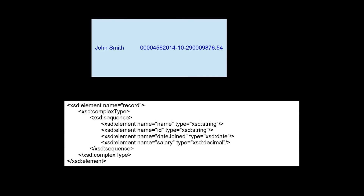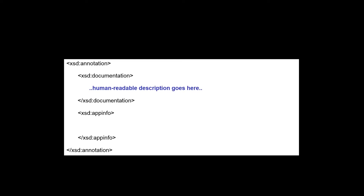The additional information is added in the form of XML schema annotations. An XML schema annotation provides additional information about an XML schema object such as an element, type or group. There are two kinds of annotation: documentation and app info. The documentation annotation is used to provide a readable description for an object, however the app info annotation is intended for programs. With DFDL we use app info annotations to describe the physical representation of the data.